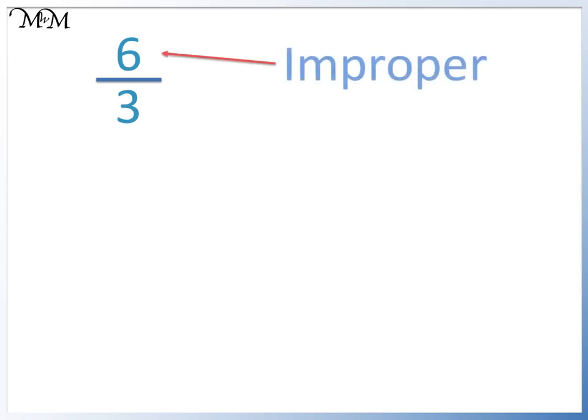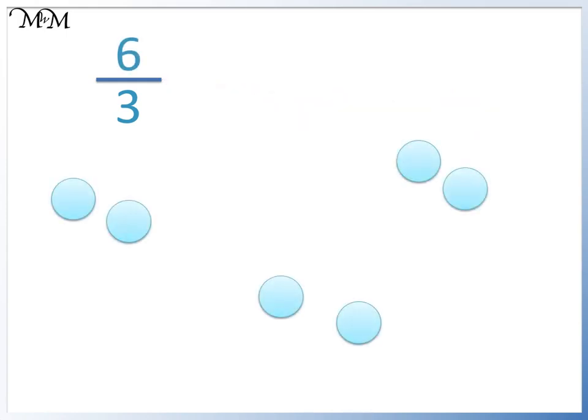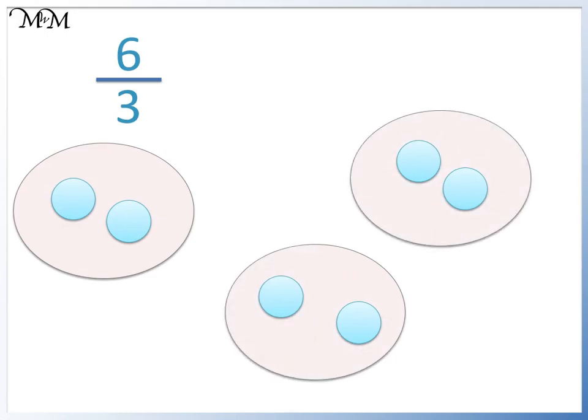It is improper because the numerator, 6, is bigger than the denominator, 3. The line means divided by. So we have 6 divided by 3. We can see that there are two counters in each of the three groups. So 6 out of 3 is the same value as the number 2.